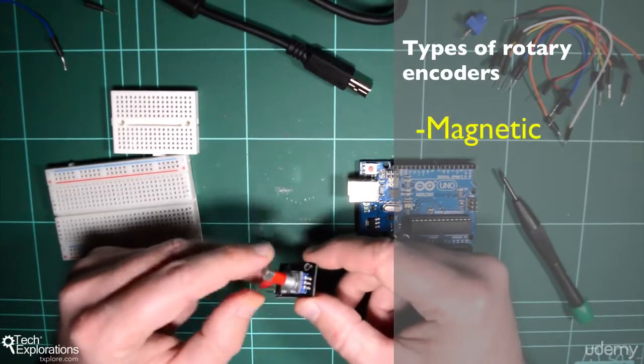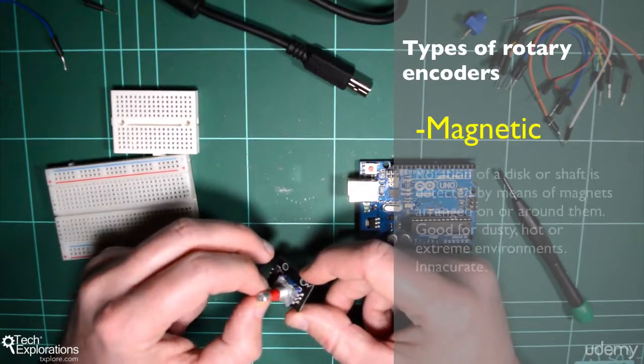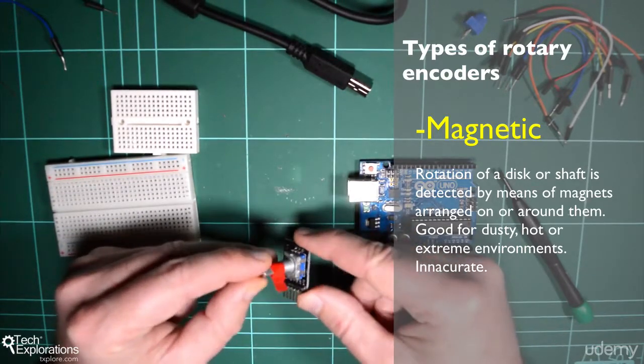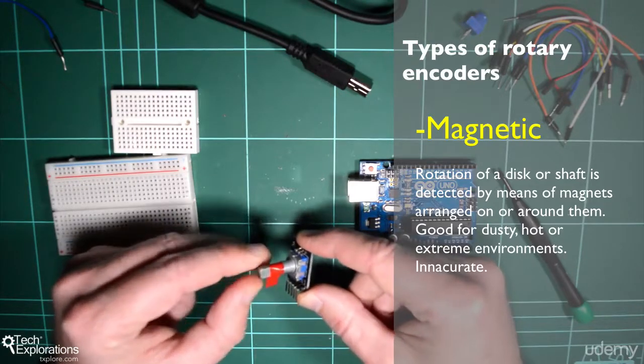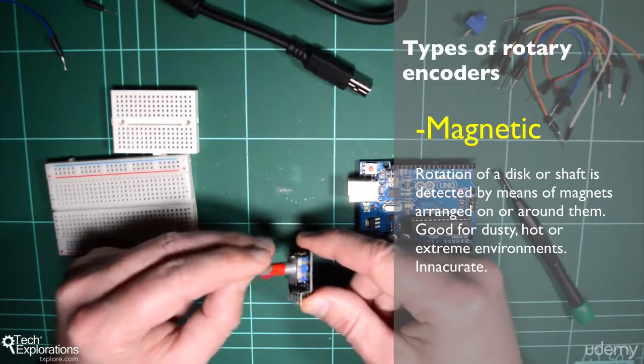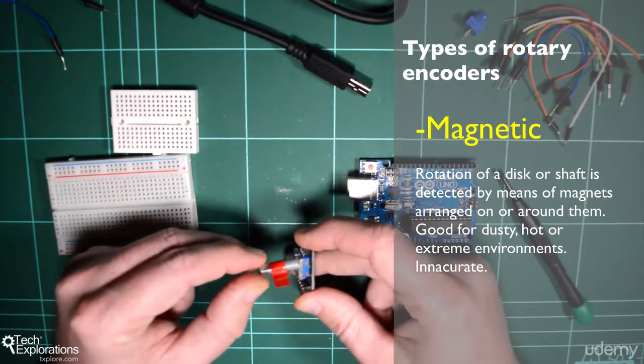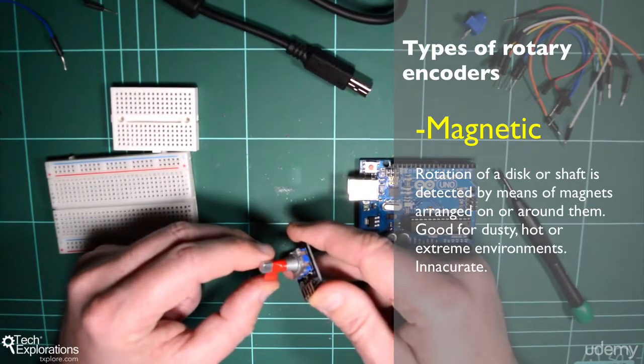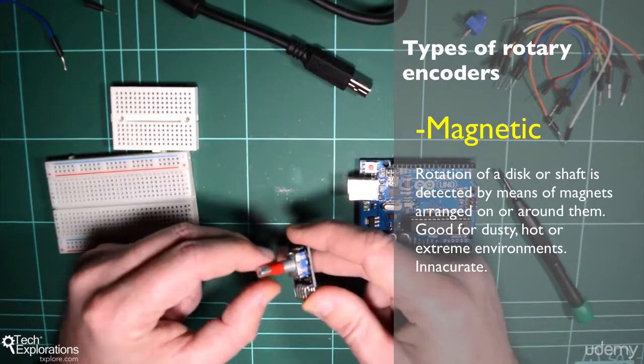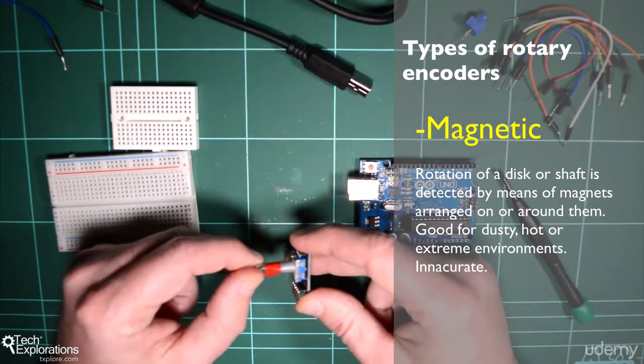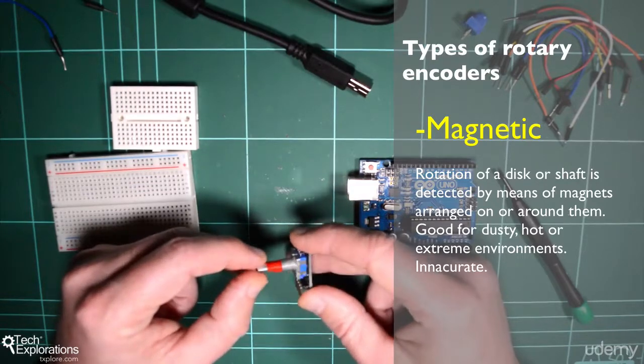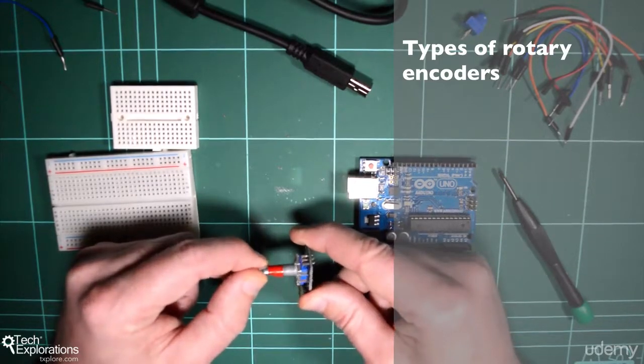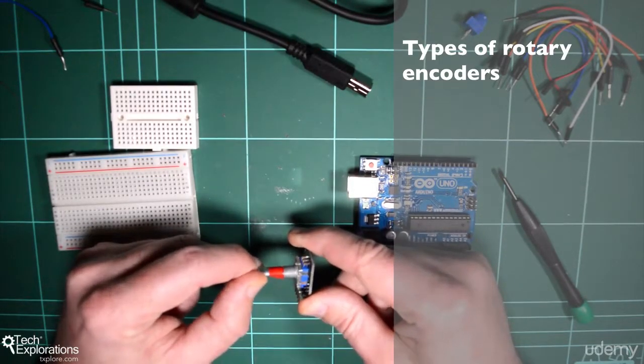There are also magnetic type rotary encoders. Those are typically used in applications where the mechanism that does the reading needs to be completely isolated from the environment, typically maybe high heat or high intensity applications. So those are not very accurate, but if you are trying to detect rotation in an engine when the engine heats up, then perhaps conductive pads or even optical means will not do. So we use magnets to keep distance from whatever the heat is generated.